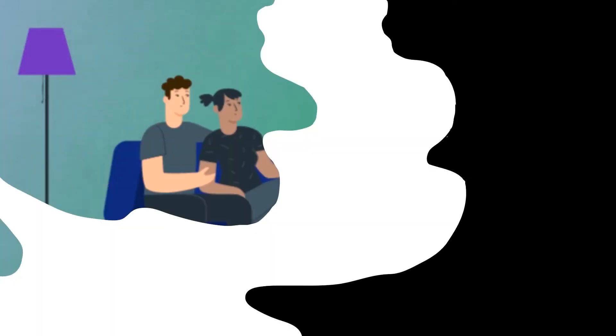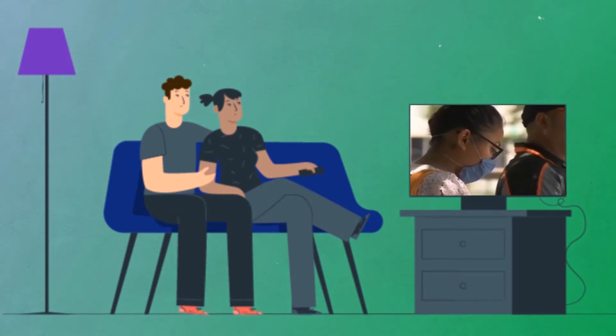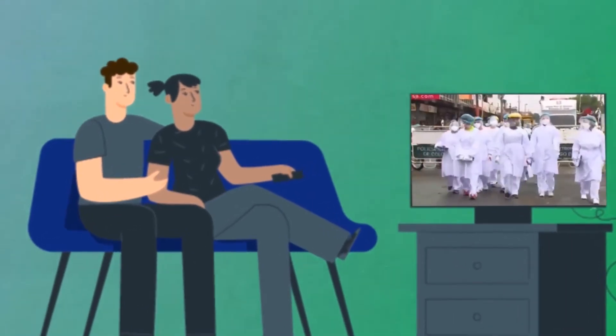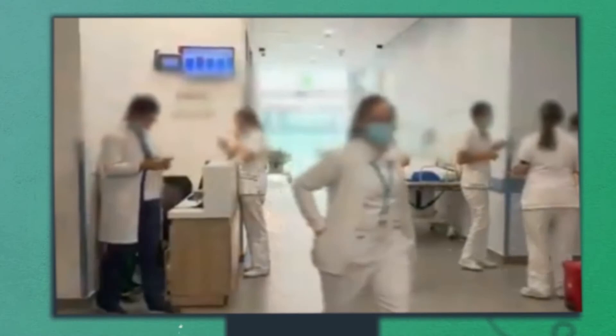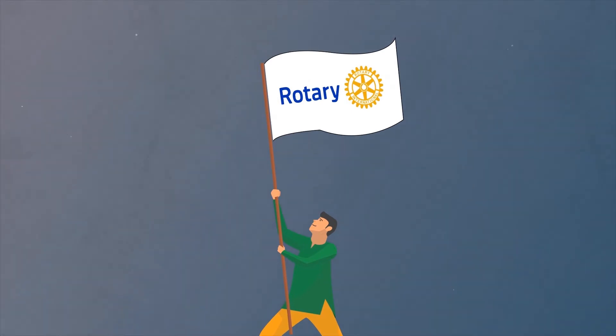In times when everything seems as scarce and limited, Rotarians around the world take action and dare to make a difference. The Royal E-Club Sogamoso Global brought together Rotarians from five countries, decided to join forces with a common mission, to make coronavirus detection more efficient in Colombia and Ecuador.